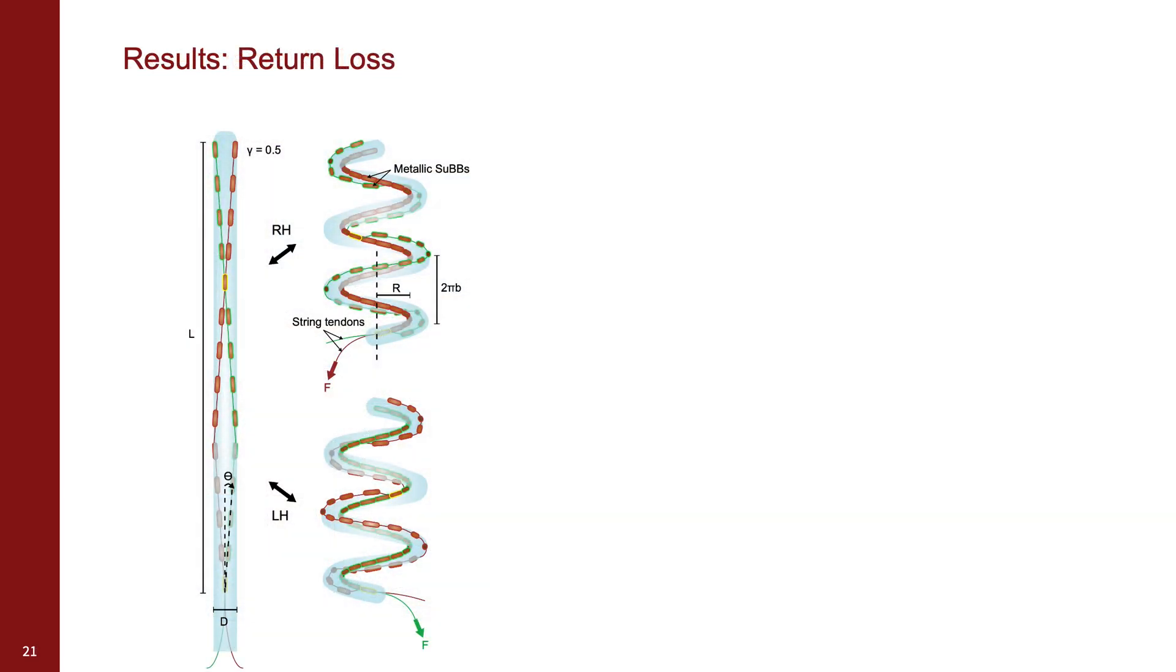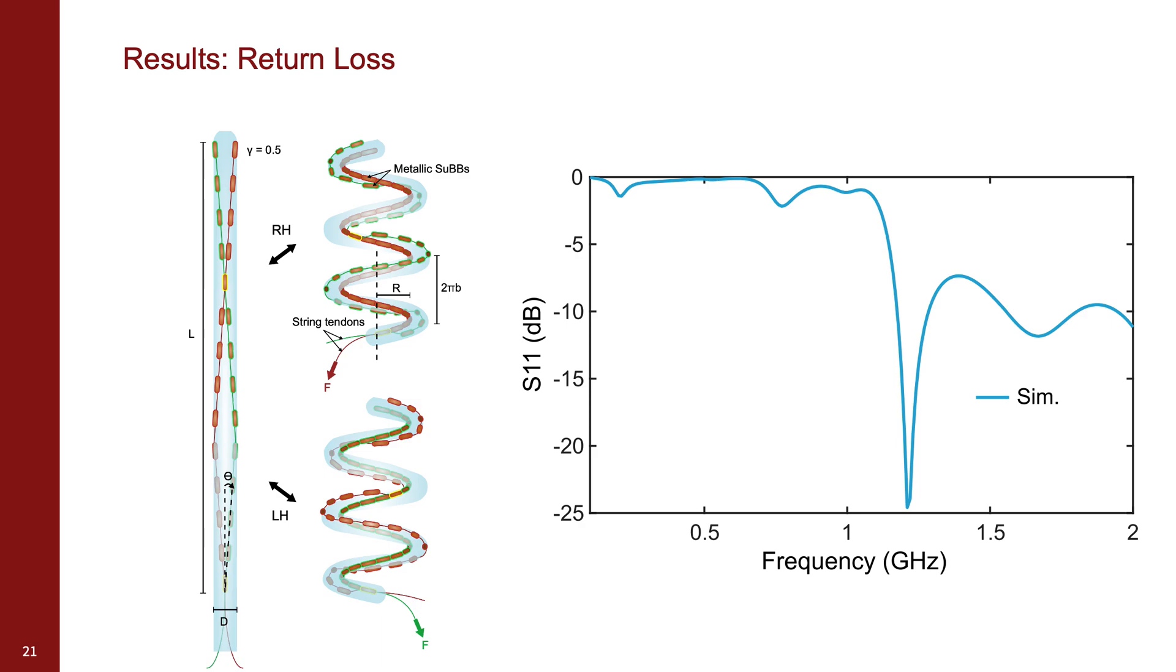Looking at the return loss measurement first, simulation results show that we expect a single clear resonance peak, which matches closely with the experimentally measured resonance peak of the helical antenna. As well, the shape of the return loss for the right- and left-handed configurations are consistent with each other.